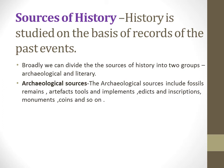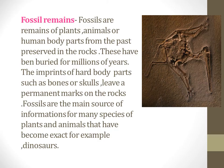The sources of a period can include fossils, monuments, bones, remains of settlements, utensils, pottery, tools, literature, written records, paintings, inscriptions, edicts, and coins. We can divide the sources of history into two groups: first is archaeological, and second is literary.